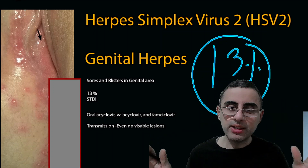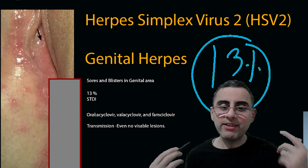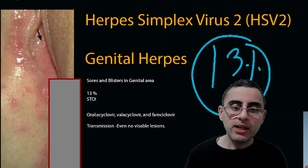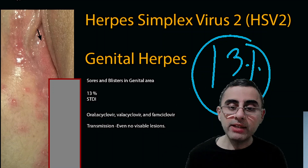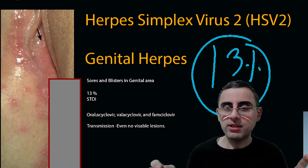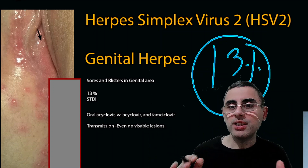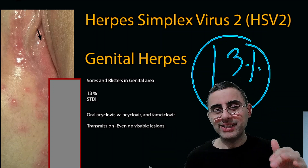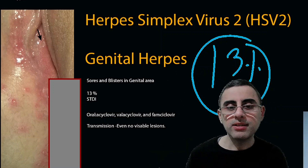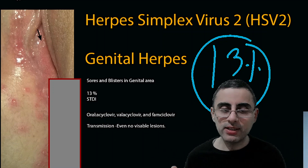The treatment for herpes simplex virus 1 and 2 is similar. Treatment consists of antiviral medications like acyclovir, valacyclovir, and famciclovir, usually in oral forms. Oral forms are stronger and topical creams are milder, but oral forms have more side effects. Topical creams have less side effects.